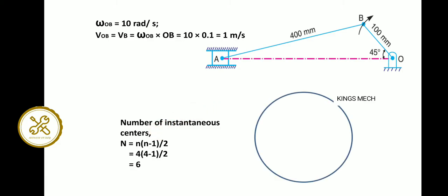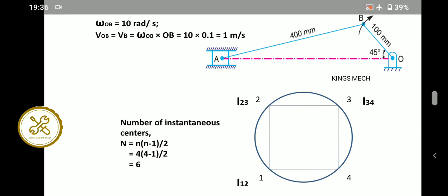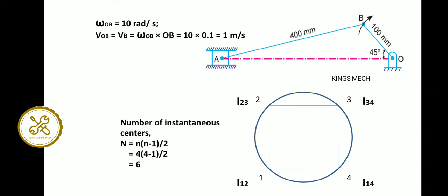That is why we already know that one circle, 4 links are 1, 2, 3, 4. So the instantaneous centers are I1,2 — I1,3 — I1,4 — I2,3 — I2,4 — and I3,4.